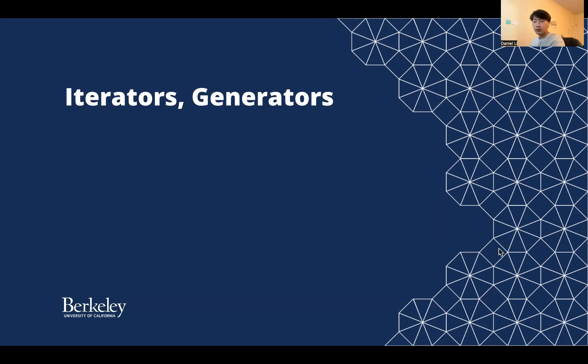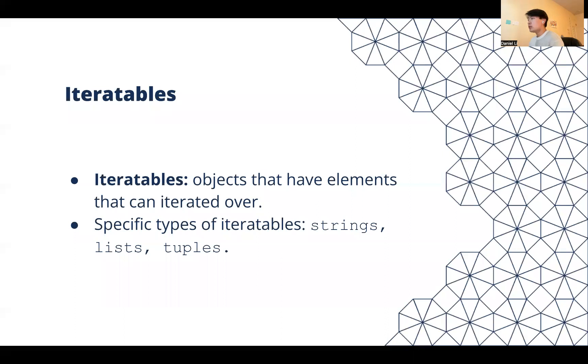So, iterators and generators. The first thing is iterables. Iterables are objects that allow us to iterate through their elements. You're probably familiar with some of these iterables already, like strings, lists, and tuples.